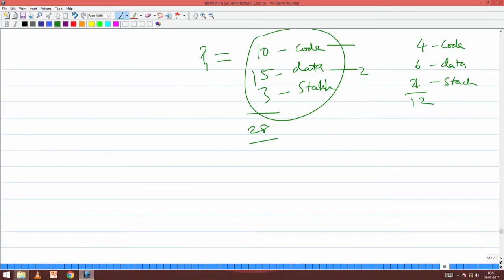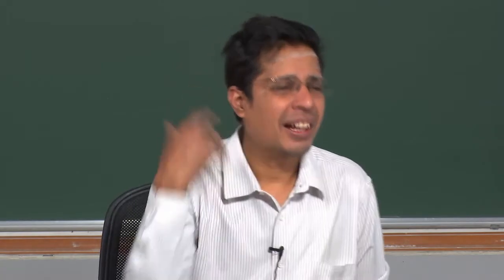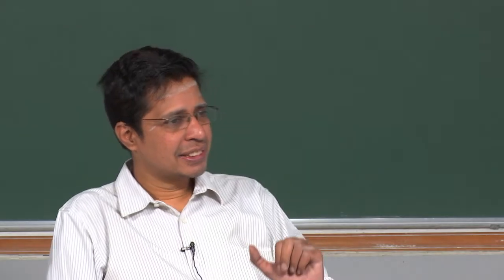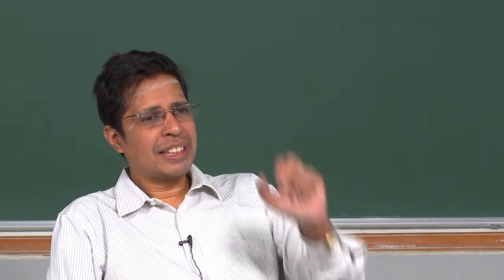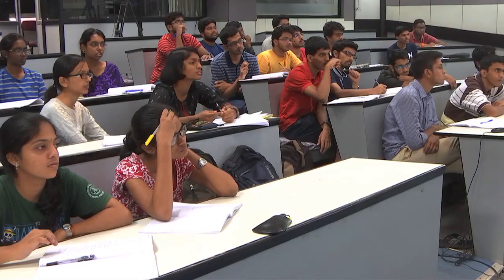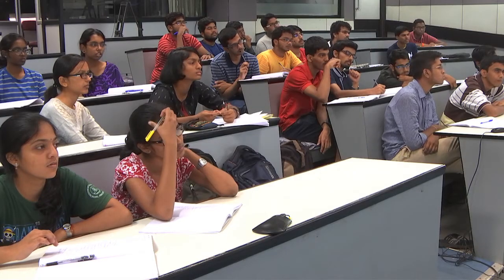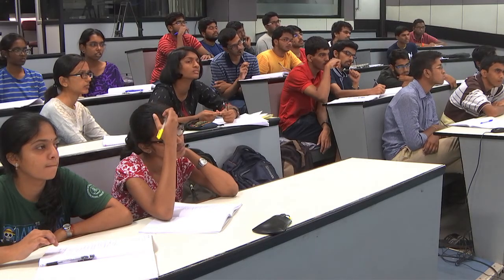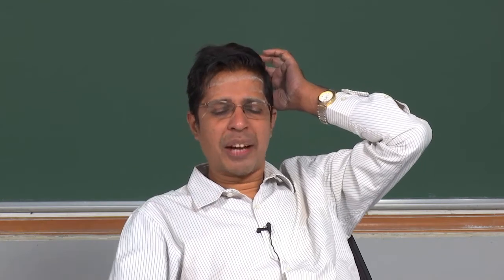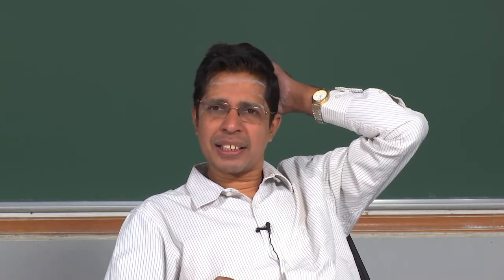Now I will ask one question and stop here: why should I give at least 2 pages for data or instruction? Why at least 2 pages? If I give only 1 page, what would be the problem? I am giving 1 page for code, 1 page for data, 1 page for stack.